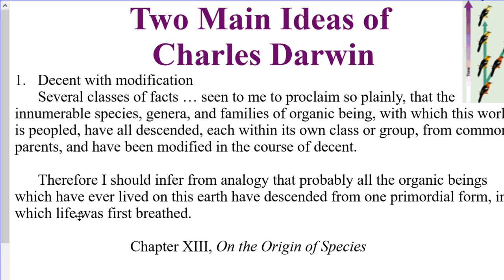I'm starting off here with two main ideas. The first one: descent with modification. Descent refers to generation after generation, the offspring that are left. Modification is the fact that with each successive generation, they're not exactly the same — they have been modified in some way. In other words, the genetics of the population is going to be changing.